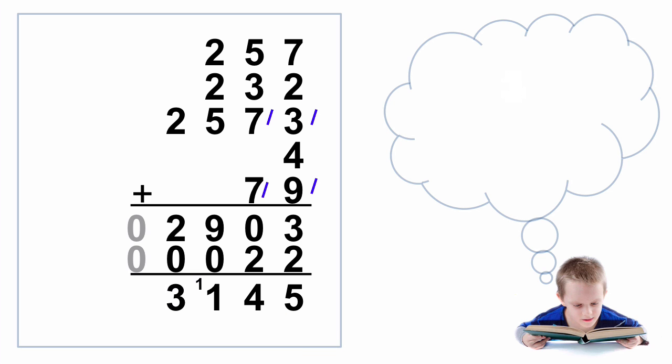So we put down the 3. Now the reason for the extra 0s is to make sure we don't miss this final L. So we have 0, 0, and 0. We didn't need it. There's our answer, 3,145. We think.